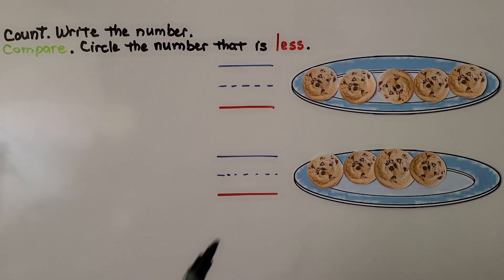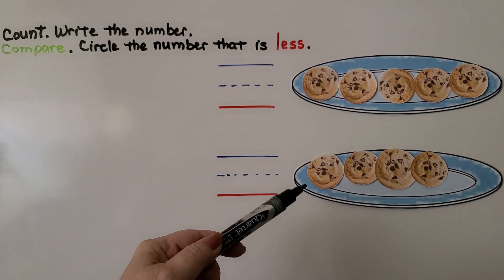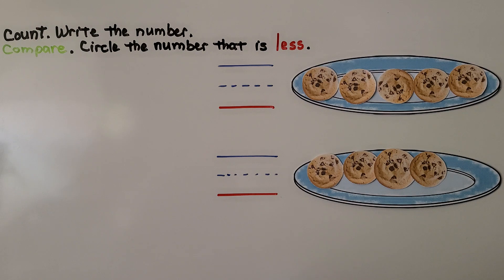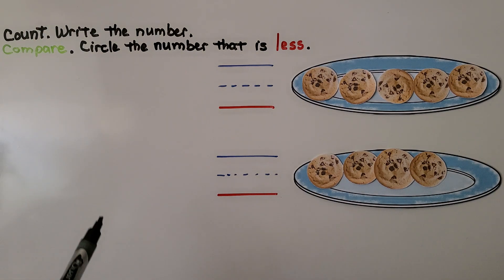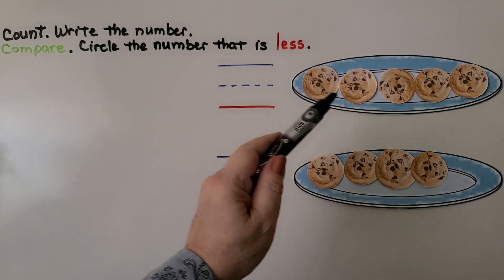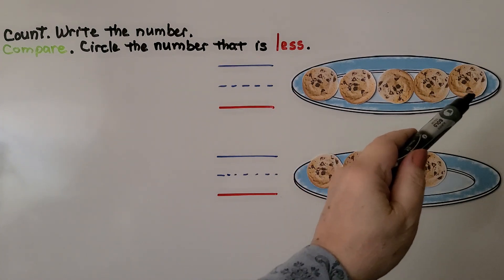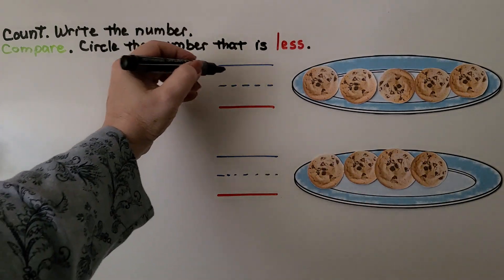Here we have cookies on a plate, and here we have some more cookies on this plate. We need to count the cookies, write the number, then compare the numbers and circle the number that is less. Let's count the cookies on this plate: one, two, three, four, five. We can write the number five.